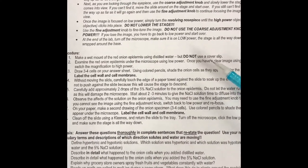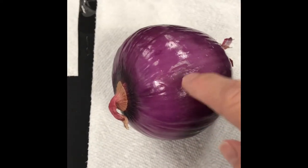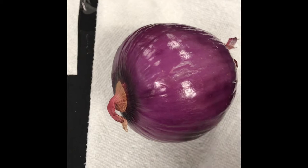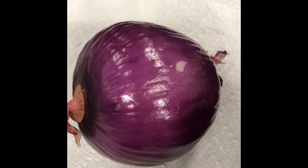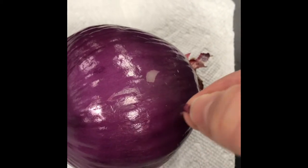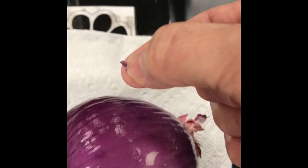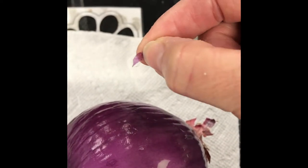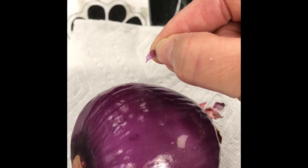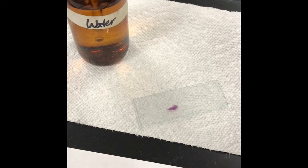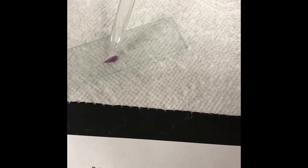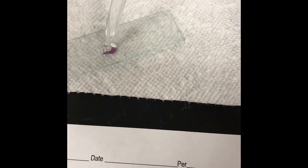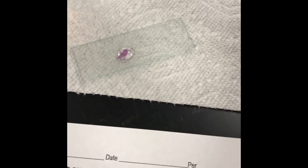I'm going to make the wet mount. First, I'll take the red onion, and this time I want a piece of the outside because I want it to be red. Do you see this piece right here? I have a little piece of the epidermis in my hand. I'm going to put that on my slide and add a couple of drops of distilled water to the epidermis. It's floating a little bit, so I may want to push it down.